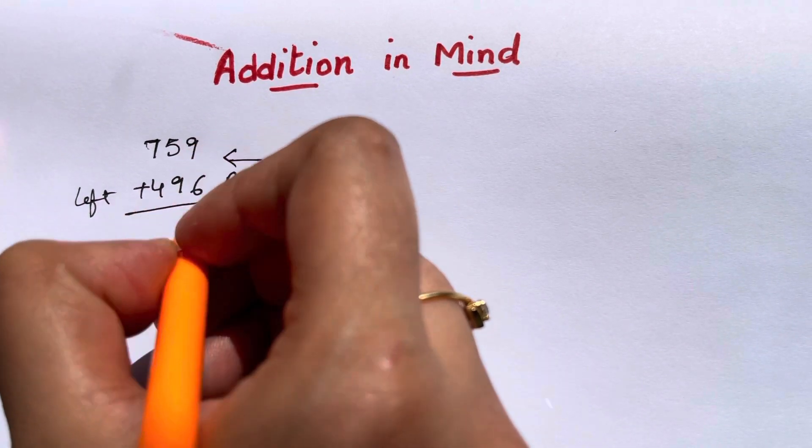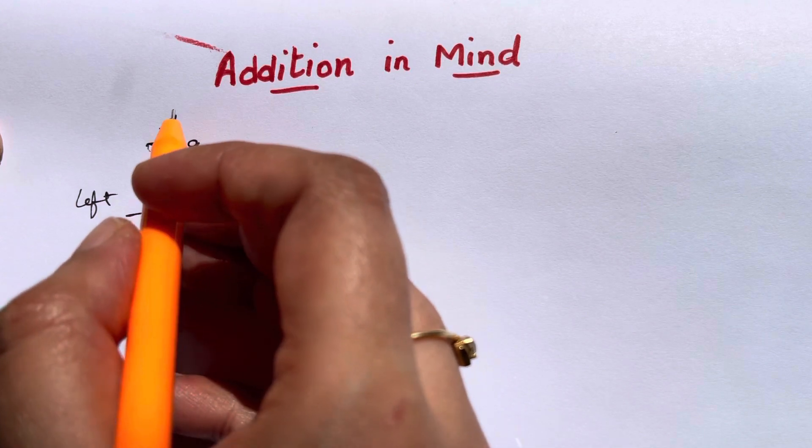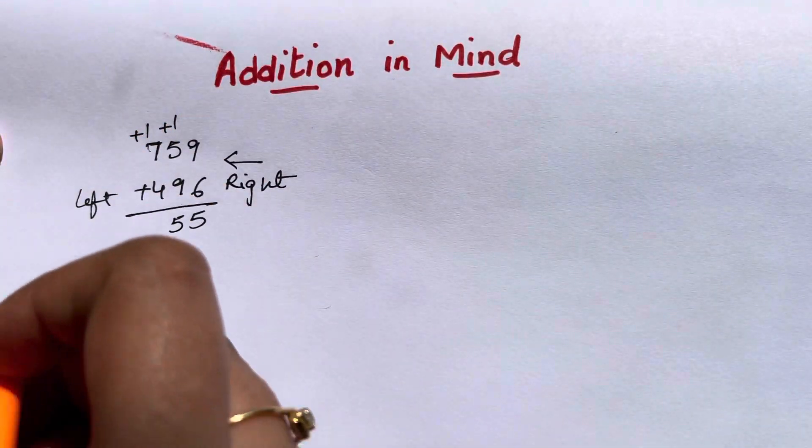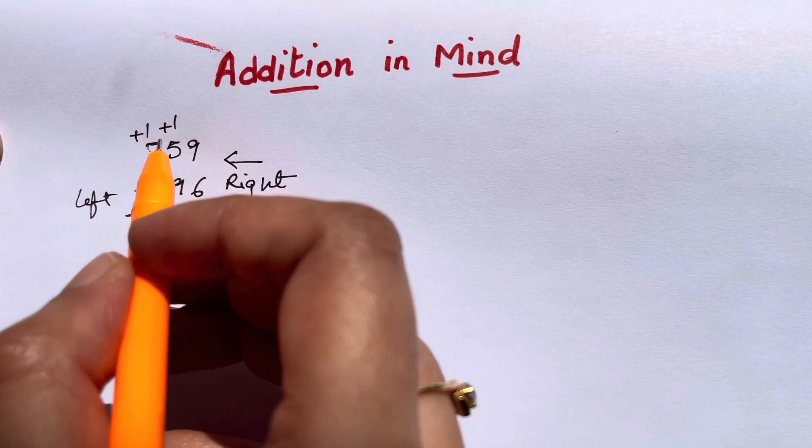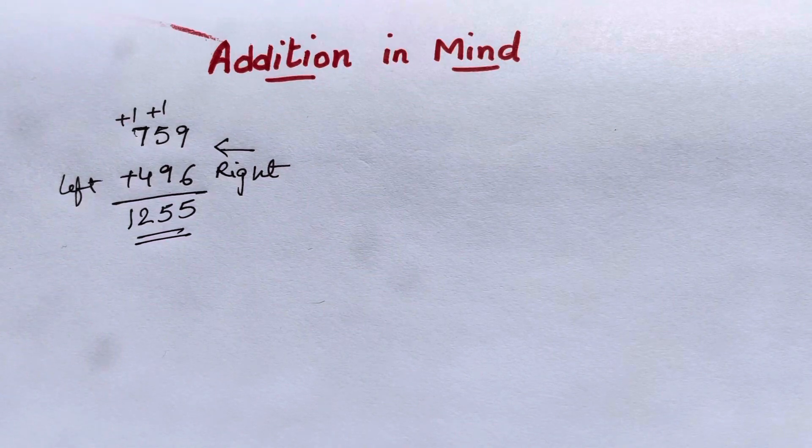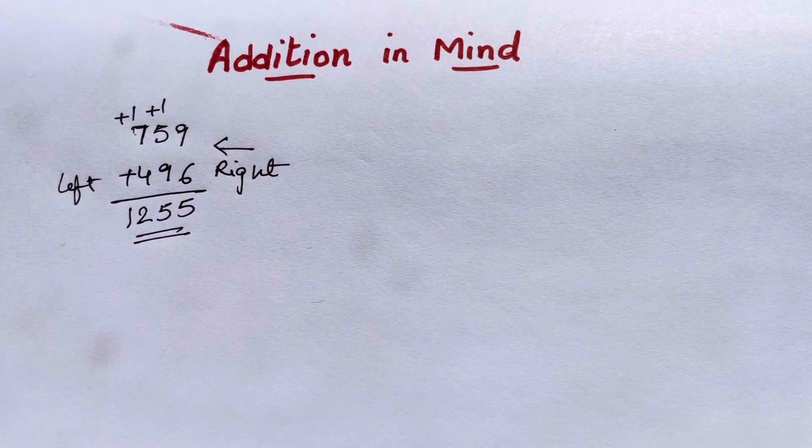You get a carry over here. Then again 9 plus 5 plus 1, that's 15. Again you get a carry over. So 7 plus 1, 8 plus 4 is 12. 1255 is your answer. This is how you do additions in school - from right to left.